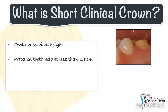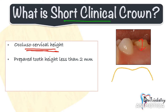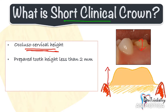First, what is considered as a short clinical crown height? When we talk about a short clinical crown, it is the occlusal-cervical height that we are taking into consideration. If you have a tooth with less than 2 mm of sound opposing parallel walls remaining after occlusal and axial reduction, that can be considered as a short abutment or a short clinical crown.